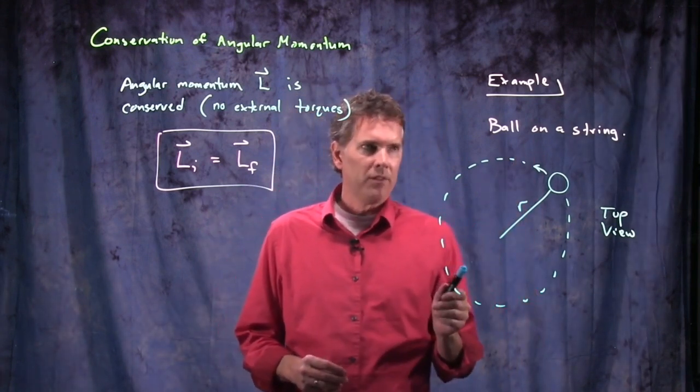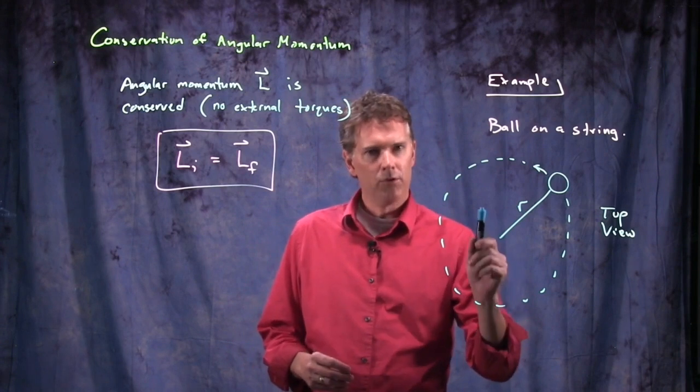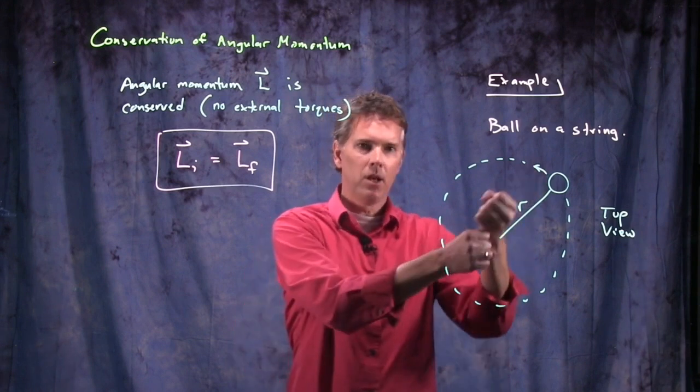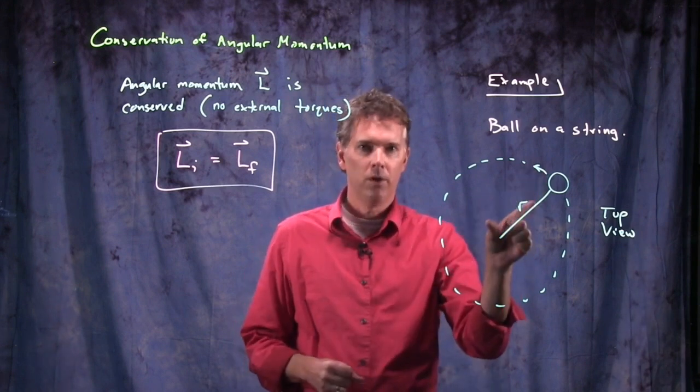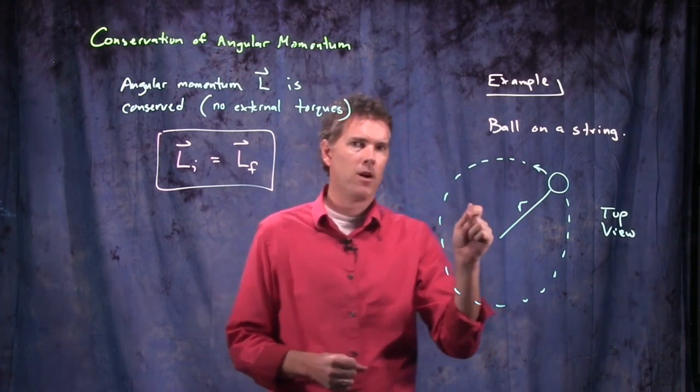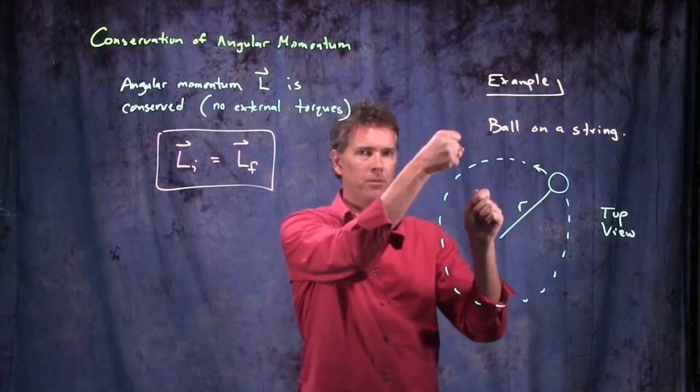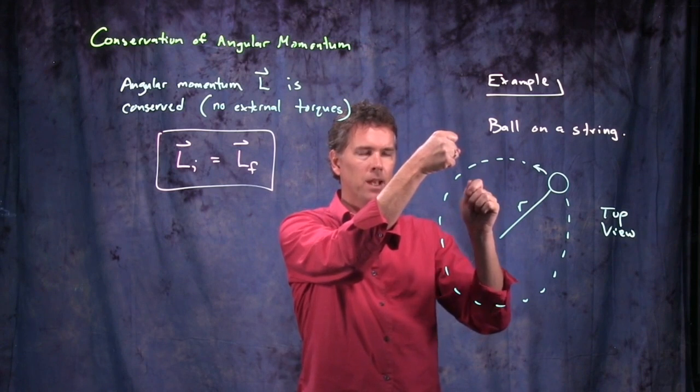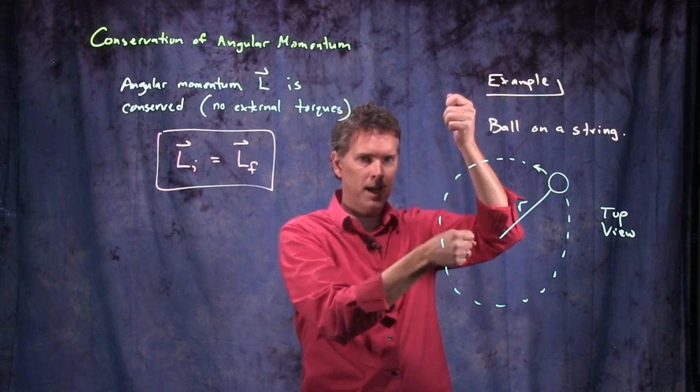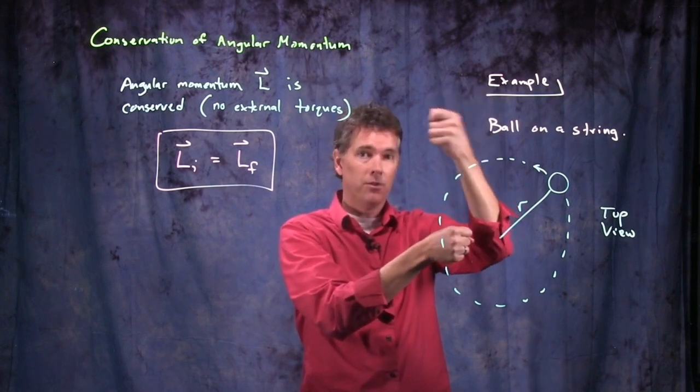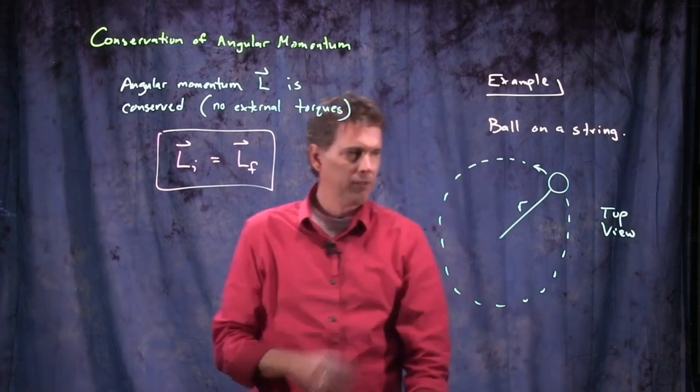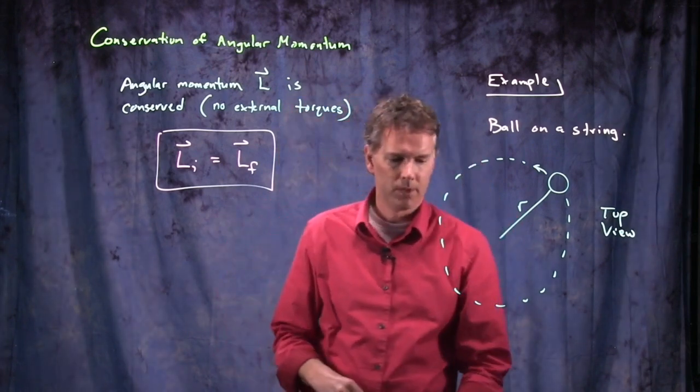Let's ask the question, what happens to the speed of the ball if we suddenly shrink the chord to half its original size? You can imagine doing this the following way: if I'm holding up a string and I'm swinging the ball around in a circle and now I pull the string down through my hand, I can change the length of the string as the ball is still spinning.